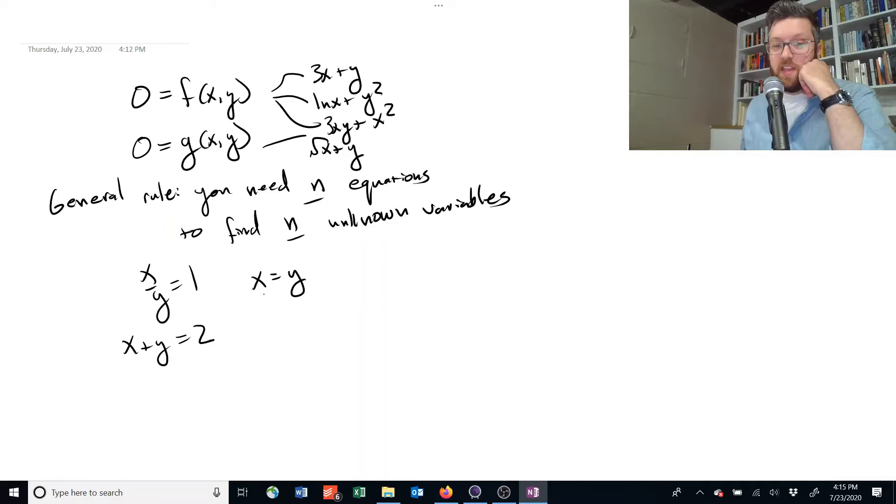So in this case, I can use the first equation and see that x equals y, and then I could use that information to solve the second one. Wherever I see x, I could actually substitute in y, and I could get y plus y equals 2. Simplify that to be 2y equals 2, divide each side by 2, and I get that y is equal to 2. And since I know that x is equal to 2, I go back up the chain and I get x is also equal to 2.